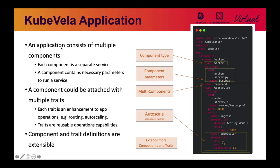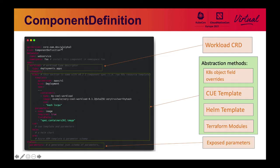Here are more details about the KubeVela application object. An application consists of multiple components. Each component is a separate service that contains the basic parameters to run a service workload. A component could be attached with multiple traits, and each trait is an operations enhancement to the app. For example, you might add an auto-scaling trait to a component and the component will have auto-scaling operations automatically applied. The component and trait definitions are fully extensible — you can add more component types and trait types for your users.